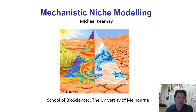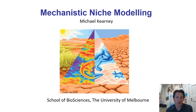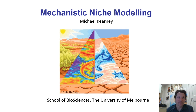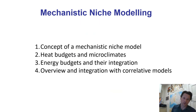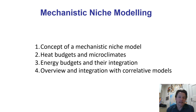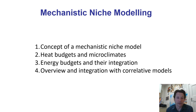This is the frontiers section of the course. Many of the ideas I'll be telling you about are very old ideas that have been around for a very long time, but it's only in relatively recent times that we've tried to apply these ideas to understand how organisms are distributed in space. I'm going to break the talk up into four parts: first, what is a mechanistic niche model; second, heat budgets and microclimates; third, energy budgets and how we integrate those with heat budgets and microclimates; and finally, an overview of the process and how we can potentially integrate it with correlative models.